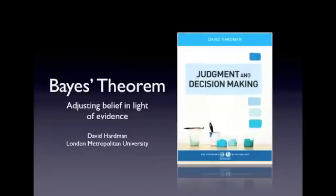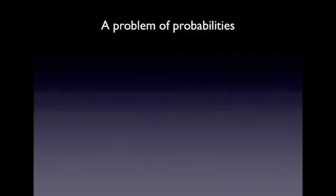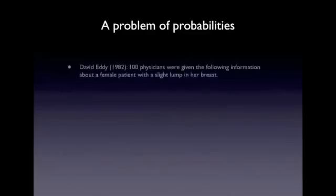And to illustrate how Bayes' theorem works, I'm going to take an example that was published in 1982 by David Eddy. David Eddy is a physician, and he was interested in how physicians should respond to diagnostic information, bearing in mind that medical tests are not always perfect, and in fact usually aren't perfect. So, in this example, Eddie gave the following information about a female patient to 100 physicians, and this was a female patient who was said to be presenting with a slight lump in her breast.